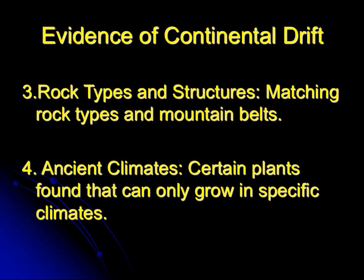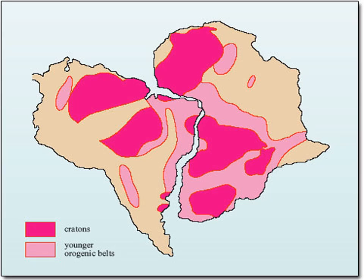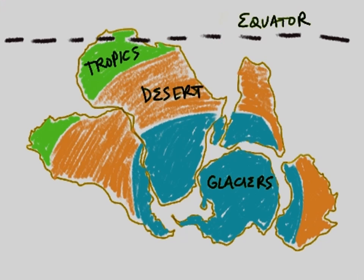Certain plants can only grow in specific climates. For example, in places that are really cold today, fossils of plants that only existed in tropical climates have been found, which tells you that landmass had to have been somewhere warm. When you match up South America and Africa, you can see that the light pink rock types match up and the dark pink match up — two different examples of matching rock types.